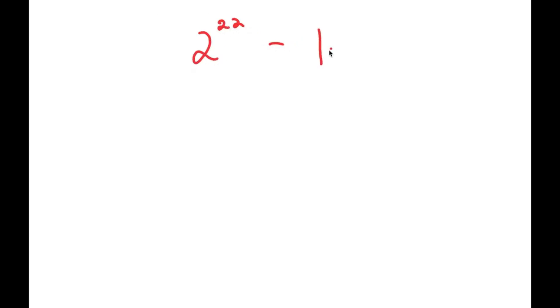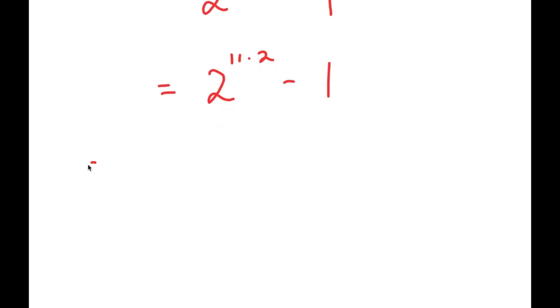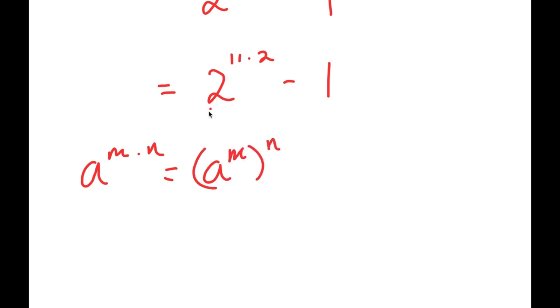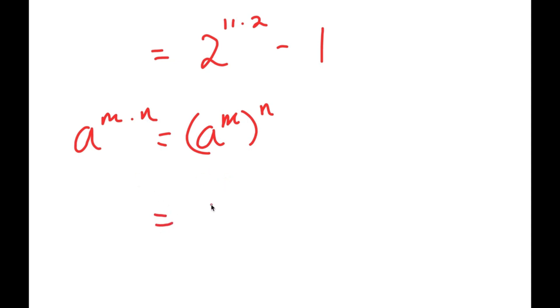In this video, I'm going to solve the problem 2 to the power of 22 minus 1. To solve this, I'm first going to rewrite this as 2 to the power of 11 times 2 minus 1. If I have something in the form a to the power of m times n, this is equal to a to the power of m to the power of n. So, 2 to the power of 11 times 2 is equal to 2 to the power of 11, to the power of 2, minus 1.